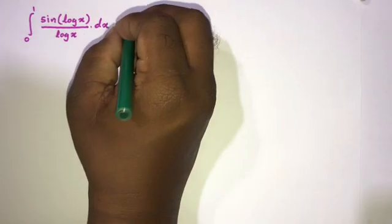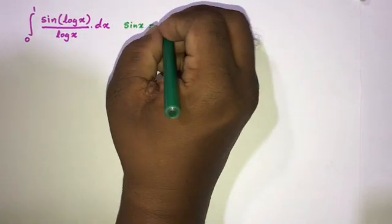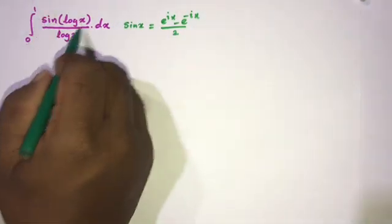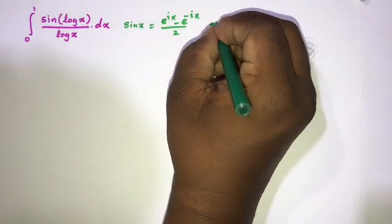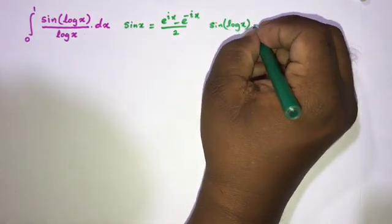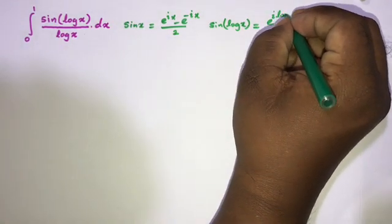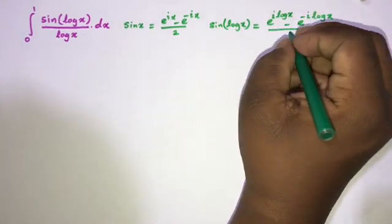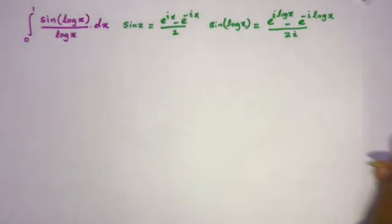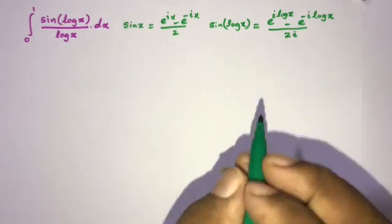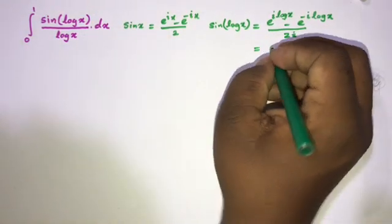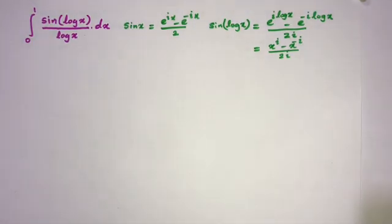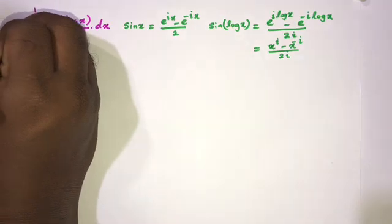We know we can write sine of x as e to the ix minus e to the minus ix over 2i. Here we have sine of natural log of x, so we can write sine of natural log of x equals e to the i times natural log of x minus e to the minus i times natural log of x over 2i. We know x equals e to the natural log of x, so this simplifies to x to the i minus x to the minus i over 2i.